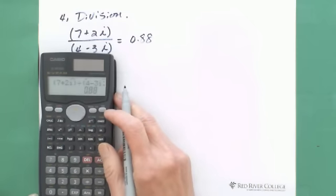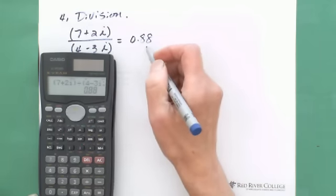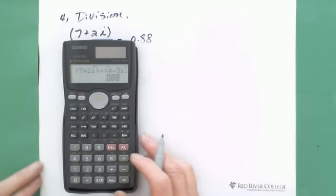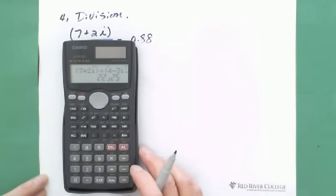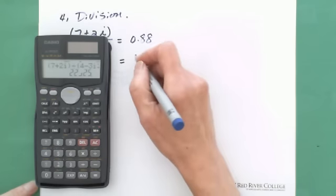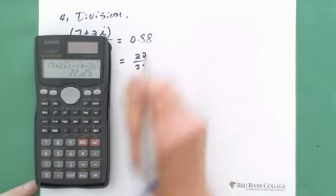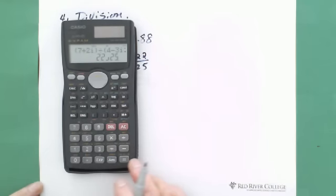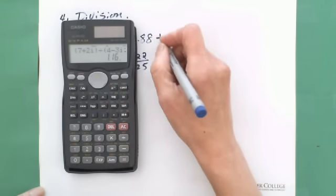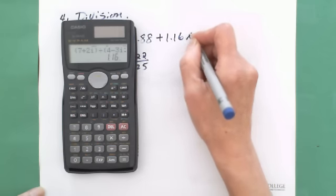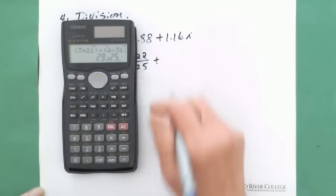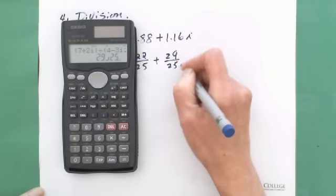If you want to show this result as a fraction, when you got 0.88, you can use shift ABC button. This is the same as working with real numbers. It gives you 22 over 25. And for the complex number portion, hit shift equal. It gives you 1.16i. To change it to a fraction, shift ABC gives you 29 over 25i.